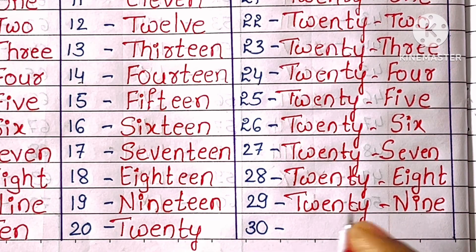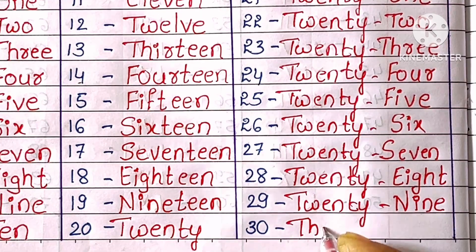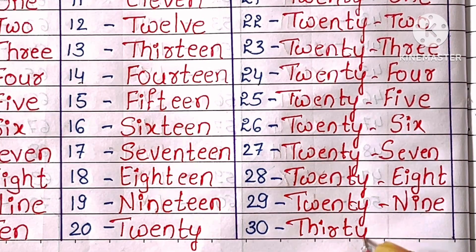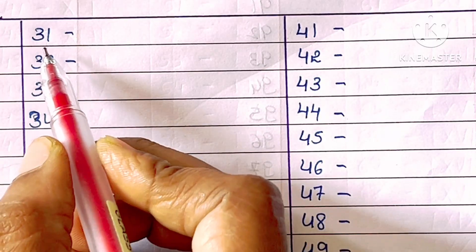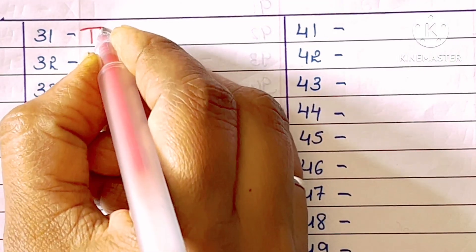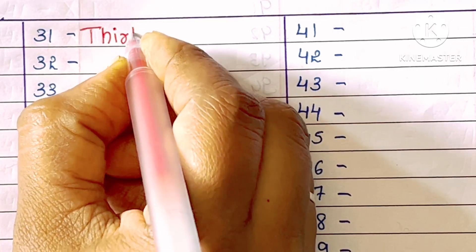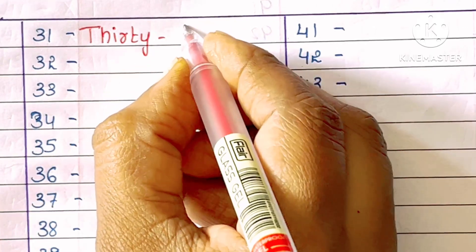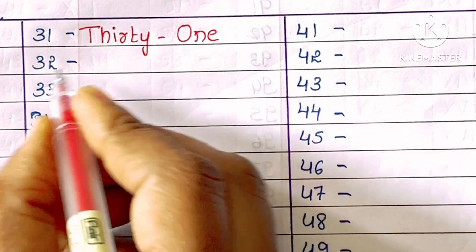30. T-H-I-R-T-Y. Thirty. 31. T-H-I-R-T-Y-O-N-E. Thirty-one.